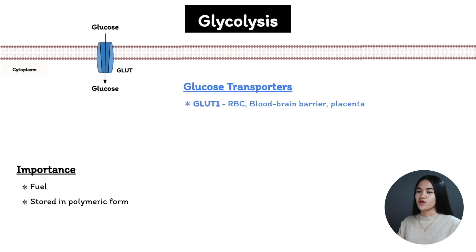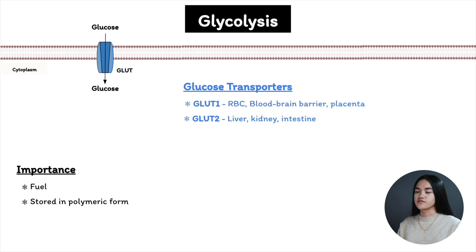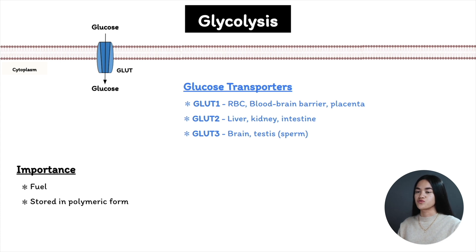GLUT 1 transports glucose to red blood cells, the blood-brain barrier, and the placenta. GLUT 2 is found in the liver, pancreatic islets, small intestine, and the kidney. GLUT 3 is in the brain, specifically neurons and testes. And GLUT 4 is in skeletal and heart muscle and fat.